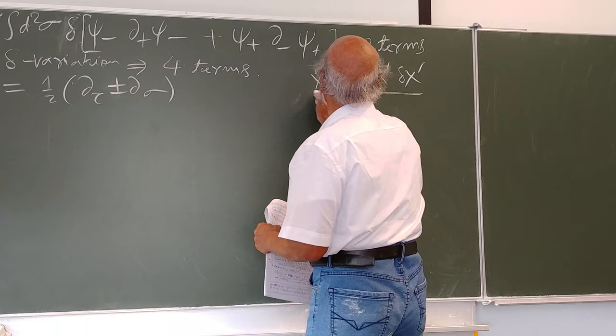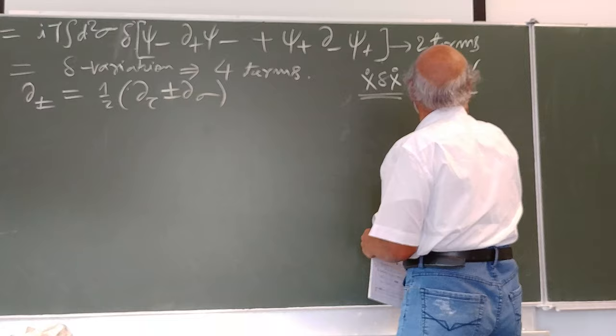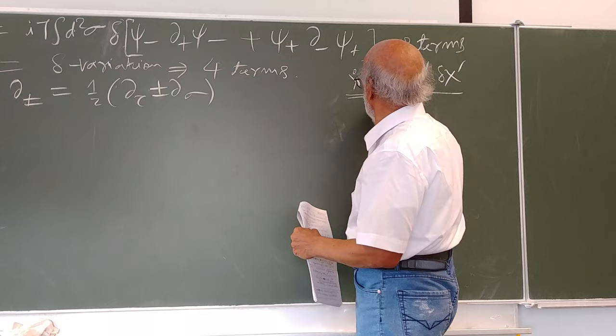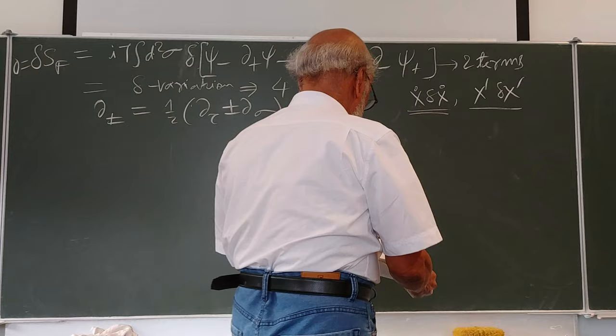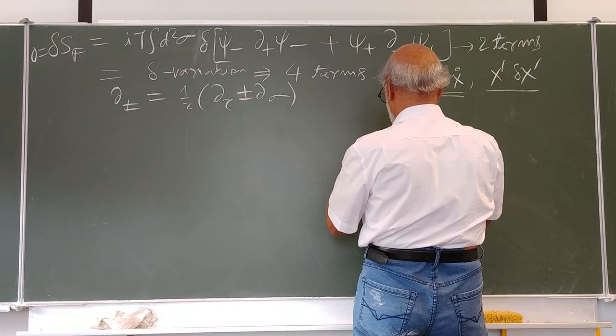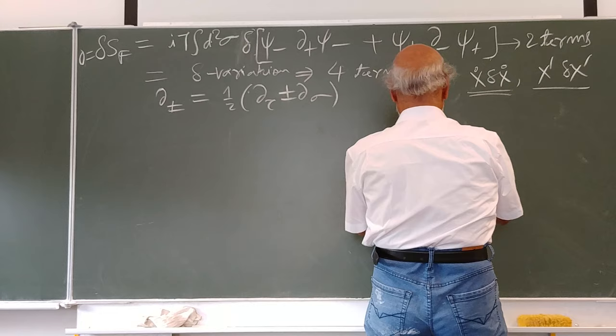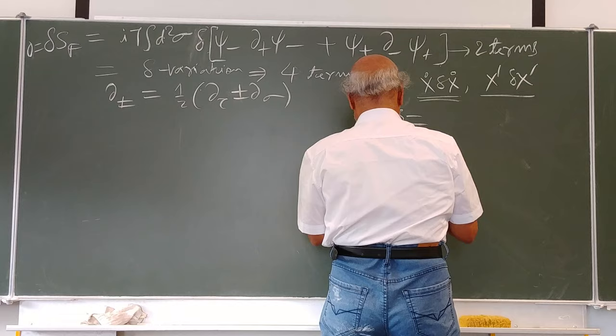Once we integrated with respect to d-tau here, and with respect to d-sigma there, we used integration by parts: the integral of first times second equals first function times integral of second, minus the integral of the derivative of first times integral of second. In the delta S we had terms of the type...